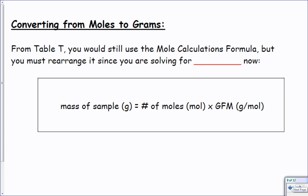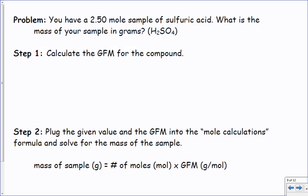Converting from moles to grams, now we're going to go backwards. We're going to rearrange and solve for grams. The mass of the sample in grams equals the number of moles times the gram formula mass. Moles is going to cancel with moles in the denominator and leave me with grams. Dimensional analysis is beautiful stuff.